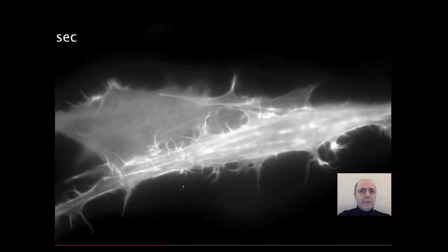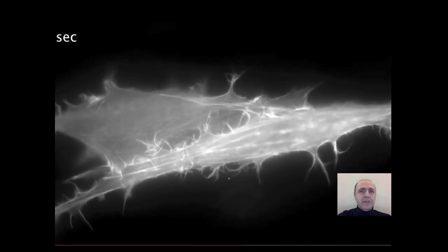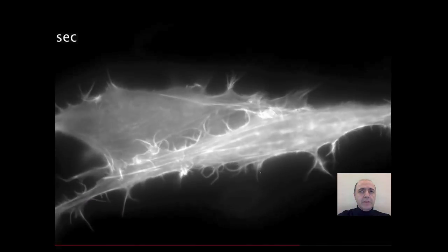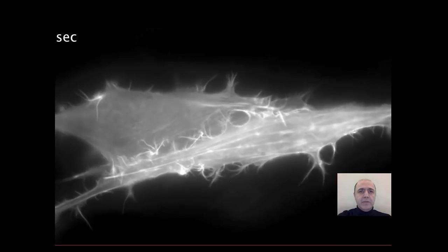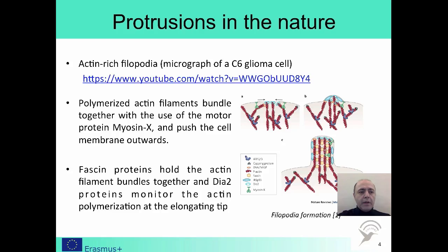Note the formation and destruction of the protrusions at the cell membrane. The active elements are bundled by the fessom proteins and moved by molecular motors to push the cell membrane out like poles under a tent. This way the protrusions are formed.